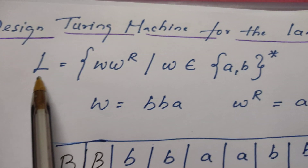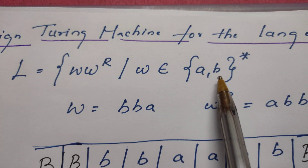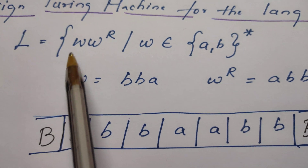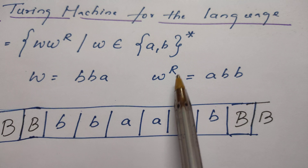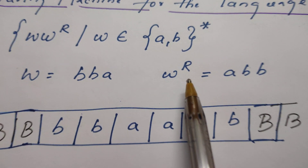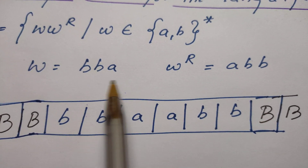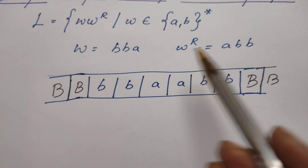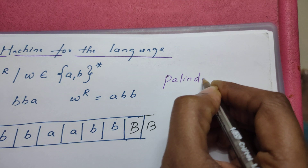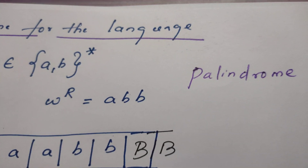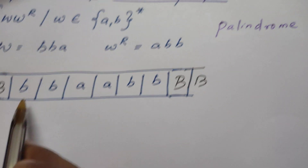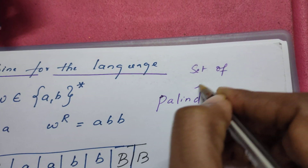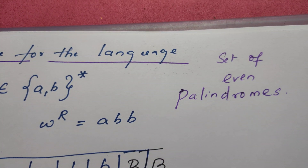The problem is the language ww^r, where w belongs to {a, b}*. w is a string made up of a's and b's, and w^r is the reverse of w. For example, if w = bba, then w^r = abb, so ww^r = bbaabb. We need to design a Turing machine to recognize these strings. The pattern this language describes is even-length palindromes.